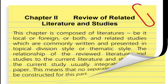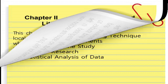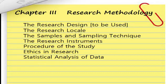In other schools, Chapter 3 heading is called Methodology, Research Methodology, Methods and Procedures, or Methodology of Research. The research methodology consists of the following parts: the research design to be used, the research locale, the samples and sampling technique, the research instruments, procedures of the study, ethics in research, and statistical analysis of data. However, the researcher must refer to the institutional format.